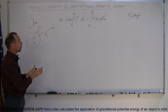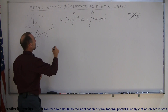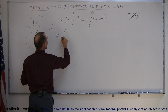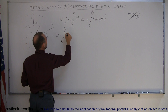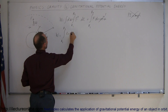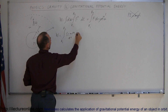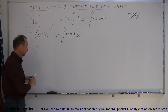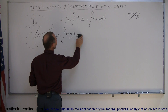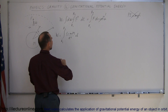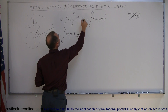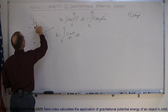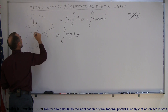The only other thing we have to do is plug in an equation for the force. Using the universal law of gravity, the work done to move something from orbit 1 to orbit 2 is equal to the integral from r1 to r2 of G times small m times big M over R squared, dR. We'll use big R for the integration variable to keep things consistent.